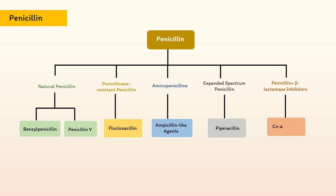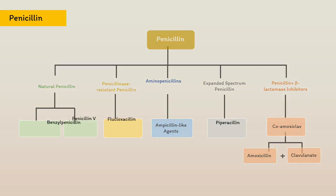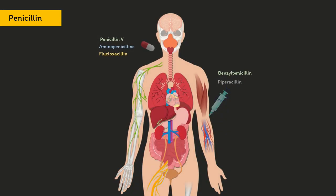If we talk about natural penicillins, benzyl penicillin is unstable in the presence of gastric acid and must be given intravenously, but penicillin V is stable and can be given orally. The aminopenicillins and flucloxacillin are also absorbed orally.